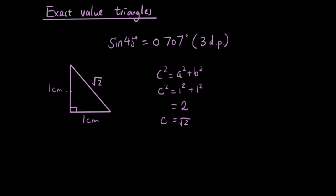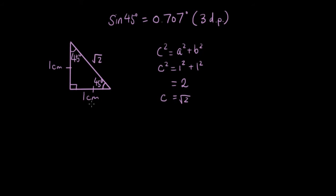Now if we have an isosceles triangle and we already have a right angle here, that means the remaining two angles must be equal, and they must both be 45 degrees — because 45 plus 45 plus 90 is 180. These two sides are equal, which means these two angles must be equal also.